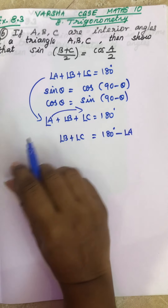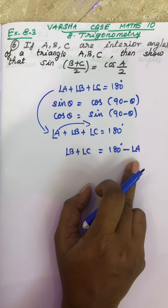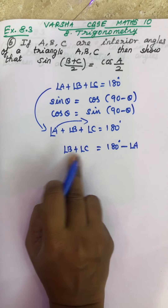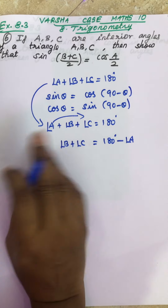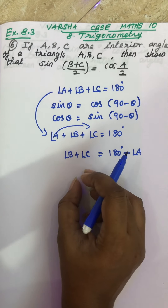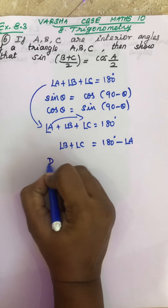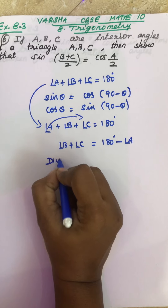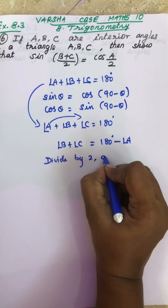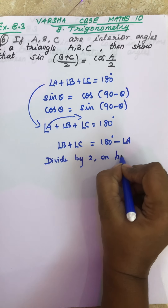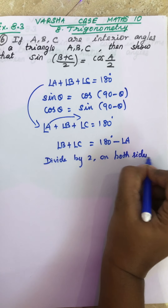After changing the sign, it will be minus A. So B plus C is equal to 180 minus A degrees. Now divide both sides — LHS and RHS — by 2.